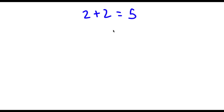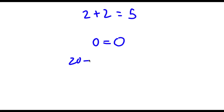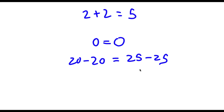Alright, so I have 2 plus 2 is equal to 5. Let's first start with 0 is equal to 0. This is a true statement, right? 0 is equal to 0 because any number is equal to itself. So on my left-hand side, I'm going to rewrite 0 as 20 minus 20. And on my right-hand side, I'm going to rewrite 0 as 25 minus 25, which is also equal to 0. So I'm not going outside the rules or anything.